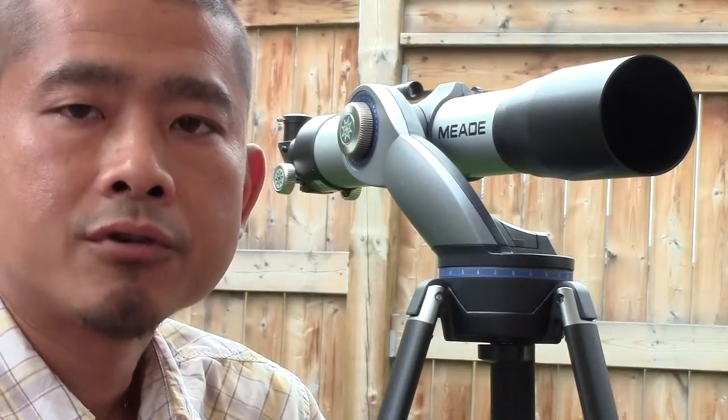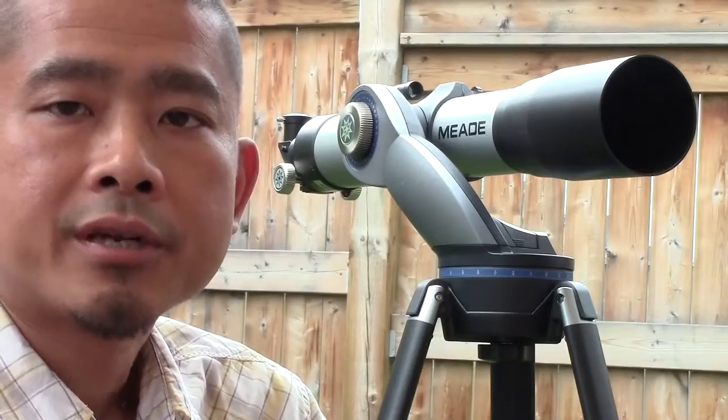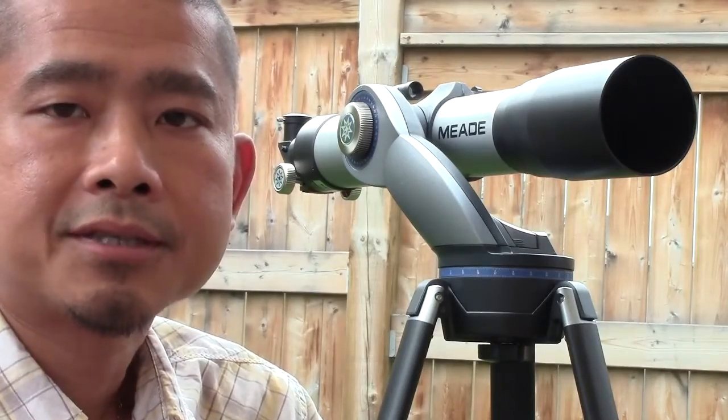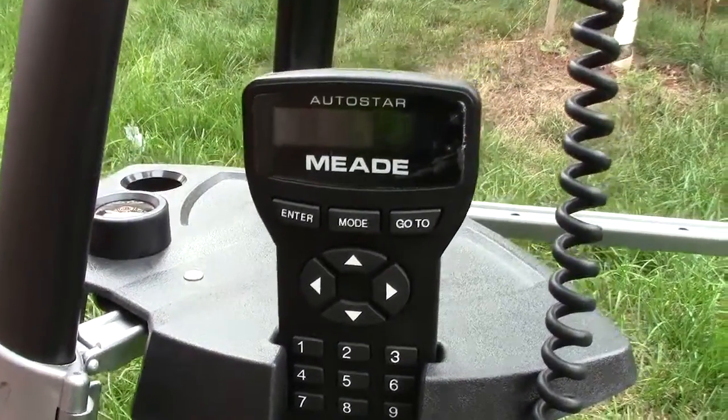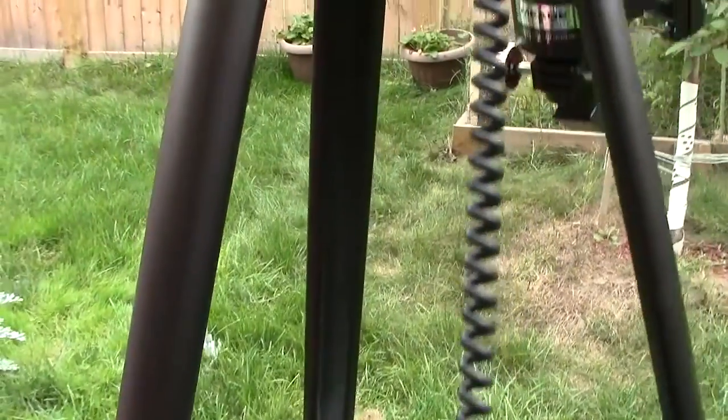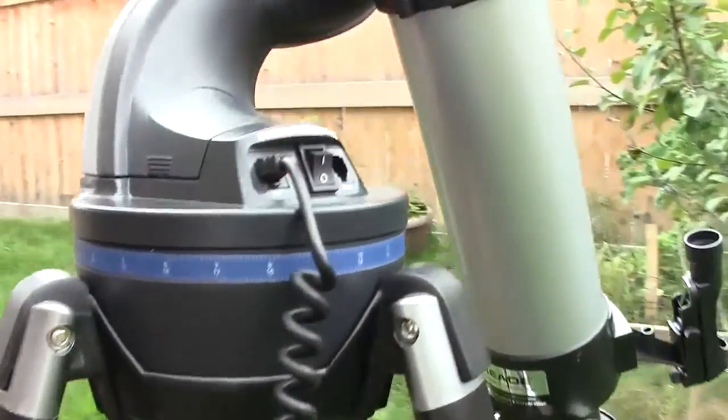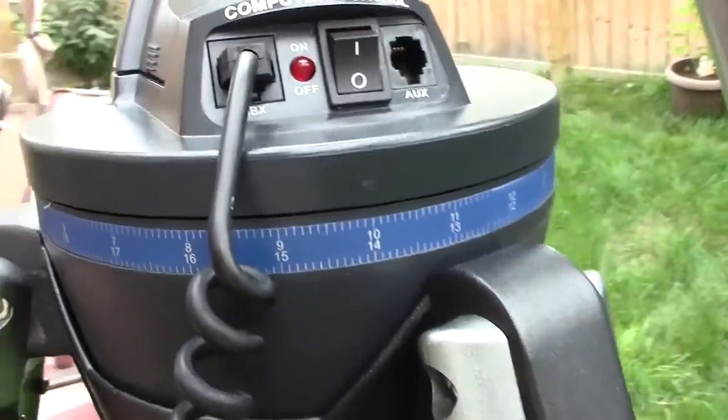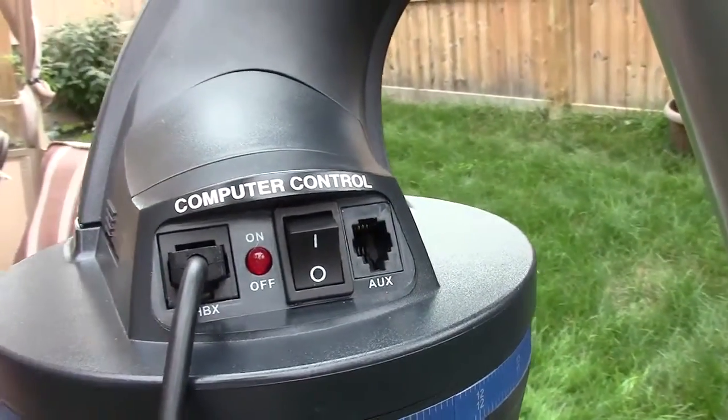Hello, today I'm going to be doing a review of the Meade DS2090 AT-TC. It's got a 90mm aperture as well as a self-guided computer system which allows beginners to navigate the sky easily.